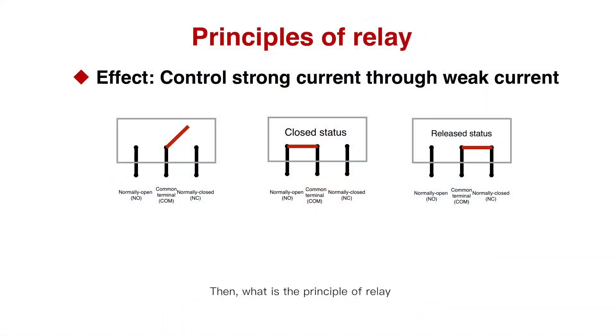Then what is the principle of relay? As we see in the left diagram, the relay actually has three external pins, which are the normally open (NO) pin, the common terminal (COMM) pin, and the normally closed (NC) pin.